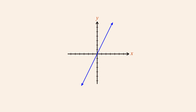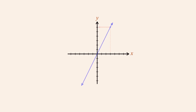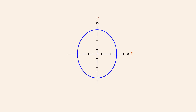For instance, this graph represents a function since each value of x maps to a single value of y. However, this graph does not represent a function since there are some values of x which map to two different values of y.